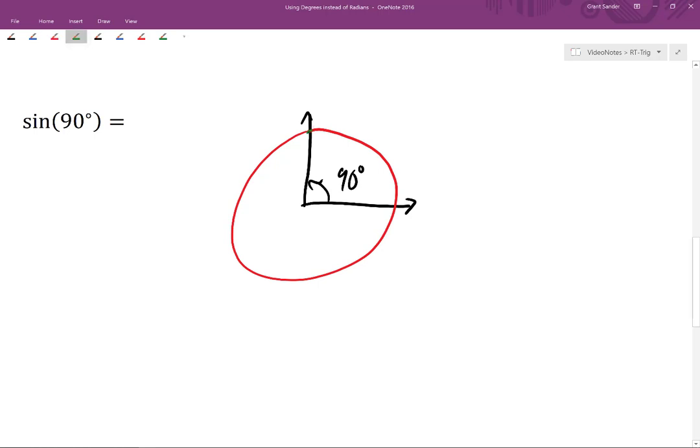that terminal point is one radius length above the center of the circle, and therefore sine of 90 degrees is just equal to 1.